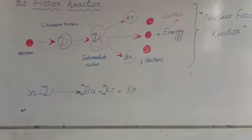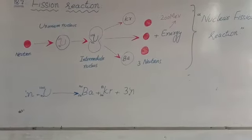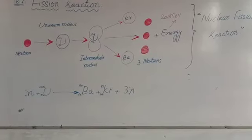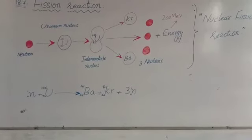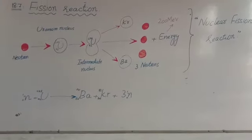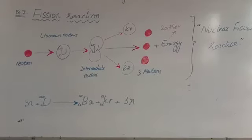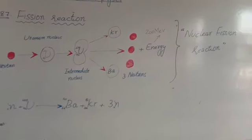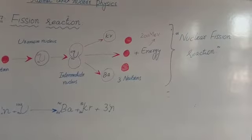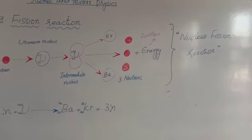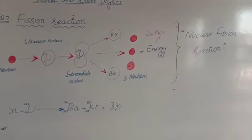In nuclear fission, the total mass of the products is less than the original mass of the heavy nucleus. In fission reaction, it releases a large amount of energy, which is why the total mass of the products is less than the original mass.